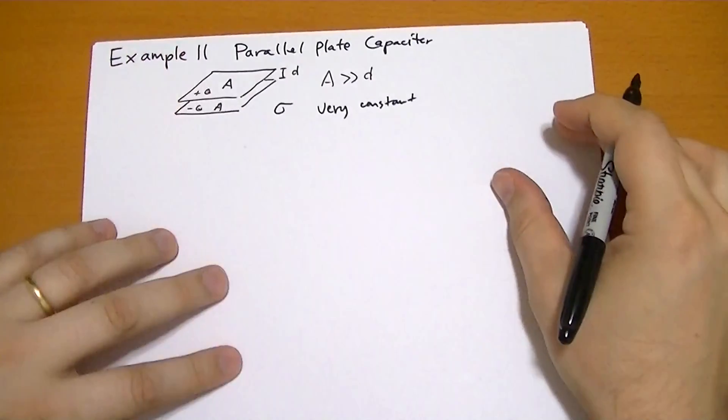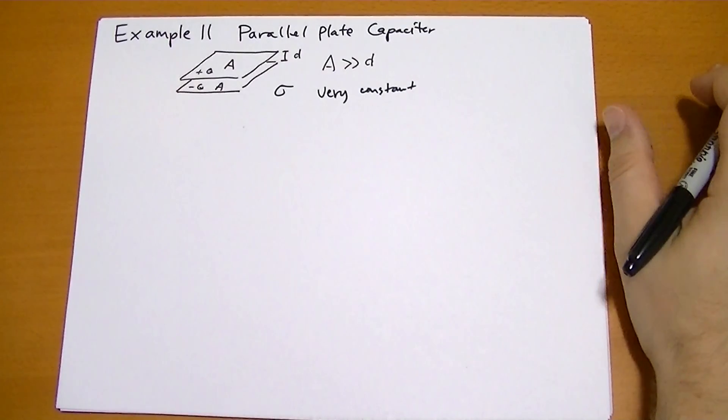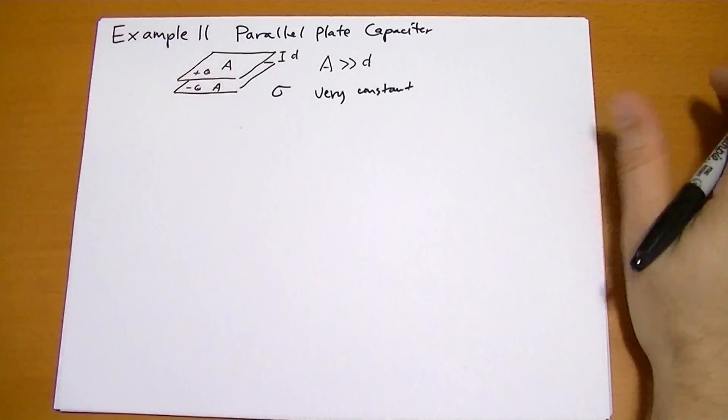And this is the time when physicists use a word kind of meaning the opposite. I mean, something is constant or it's not. Very constant means it's almost constant.